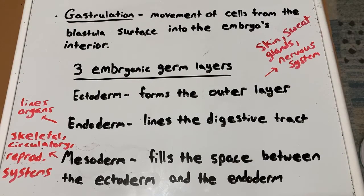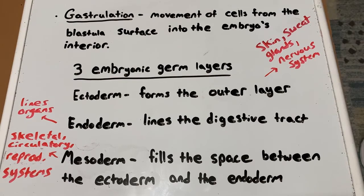In this step of the embryonic stages, the blastula undergoes gastrulation. Gastrulation is the movement of cells from the blastula surface into the embryo's interior. This movement of cells into the interior allows for the later development of both tissues and organs. Gastrulation causes the cells to be arranged into three layers, known as the embryonic germ layers.